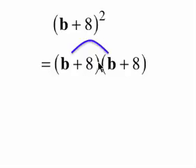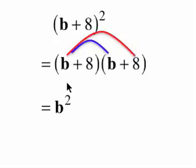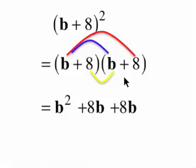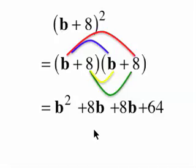So the two b's are going to multiply each other, and that's going to give us b squared. And then the b is going to multiply the 8, giving us 8b. Then this 8 is going to multiply the b, giving us 8b again. And then the 8 is going to multiply the 8, giving us 64.